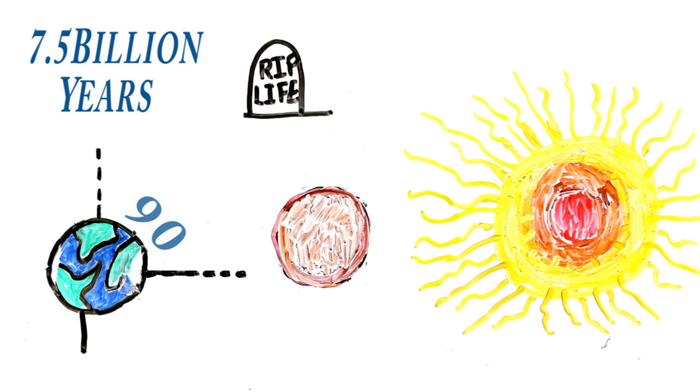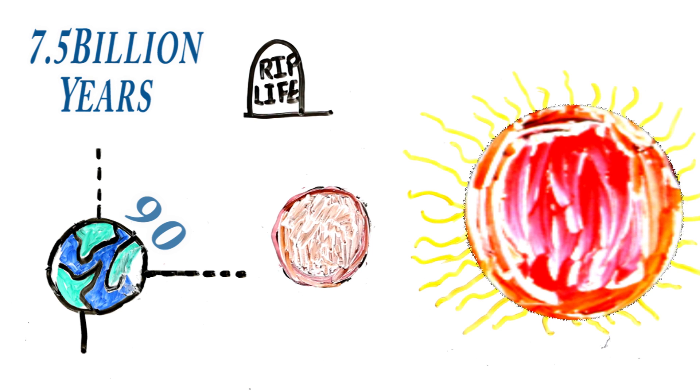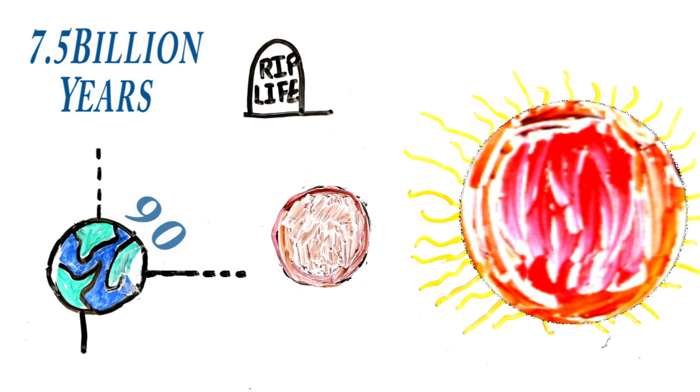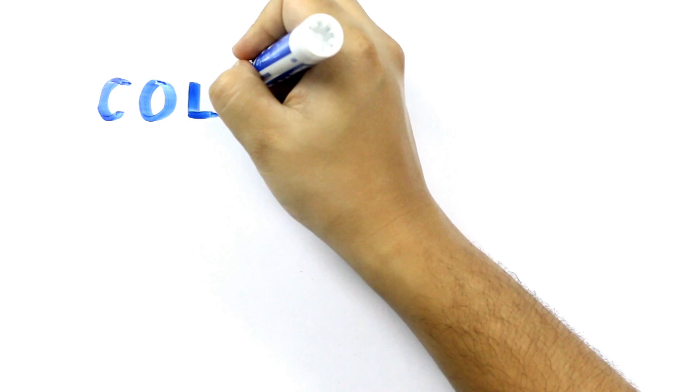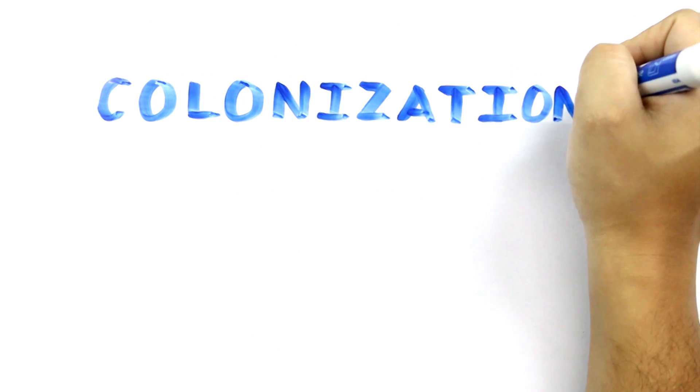The most probable fate of the planet is absorption by the Sun in about 7.5 billion years, after the Sun has entered the red giant phase and expanded to cross the planet's current orbit. A long shot exists for life to survive Earth's fate, but it would involve some novel solutions or a serious space colonization effort.